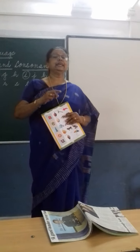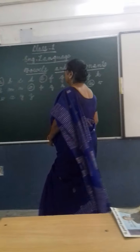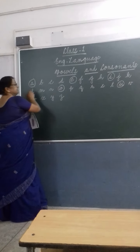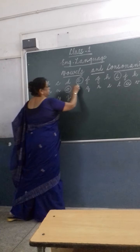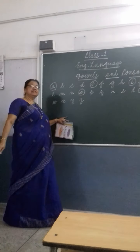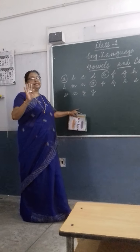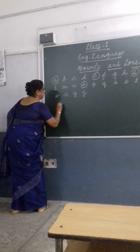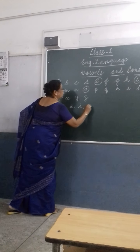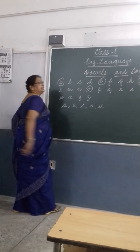Already we learnt that in the English alphabet there are 26 letters. In these 26 letters, there are 5 vowels. They are A, E, I, O, U. So how many vowels are there in the English alphabet? There are 5 vowels in the English alphabet. They are A, E, I, O, U. So these are the vowels in the English alphabet.